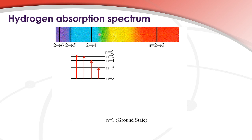The second black line corresponds to the energy absorbed when the electron moves from n equals 2 to the n equals 4 energy level. The next black line corresponds to the energy absorbed when the electron moves from n equals 2 to the n equals 5 energy level. And the last black line corresponds to the energy absorbed when the electron moves from n equals 2 to the n equals 6 energy level.